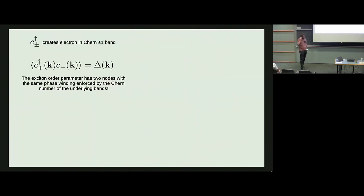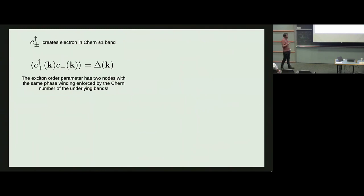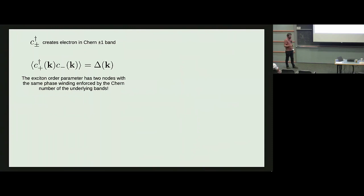Let me explain why we call this intermediate case a textured exciton insulator. I'll go away from Landau levels and consider Chern bands—a Chern +1 band and a Chern -1 band, where each band lives in a different symmetry charge sector of U(1)V. In Moiré language, I have a Chern +1 band in one valley and a Chern -1 band in the other valley.